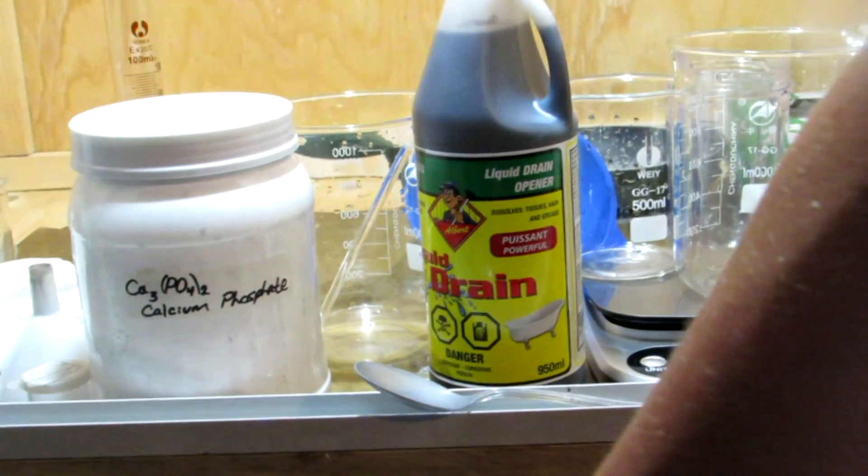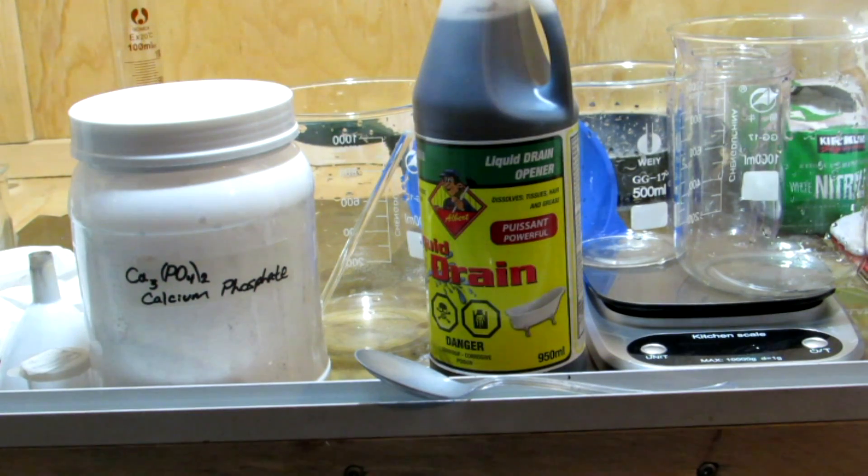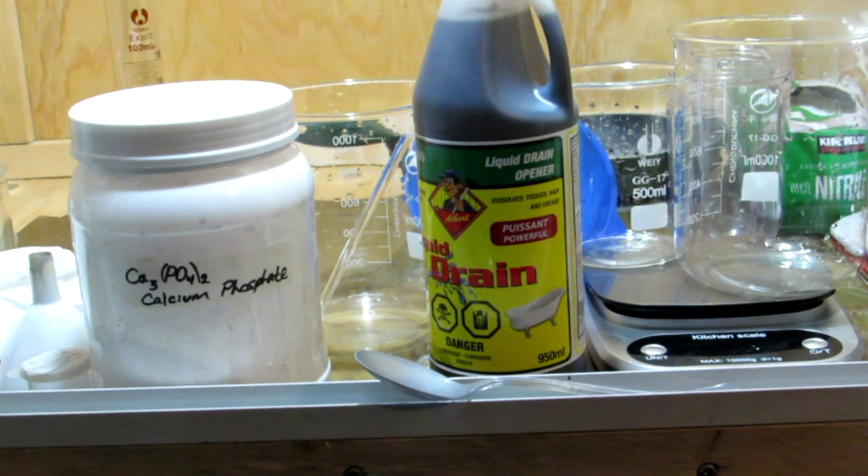We're going to be making this with the eventual goal of making some white phosphorus, so stay tuned for that. We're going to be adding the sulfuric acid to the calcium phosphate, and this will precipitate out calcium sulfate from solution, and we'll be left with a solution of phosphoric acid. We can then partially neutralize this to form our monosodium dihydrogen phosphate.